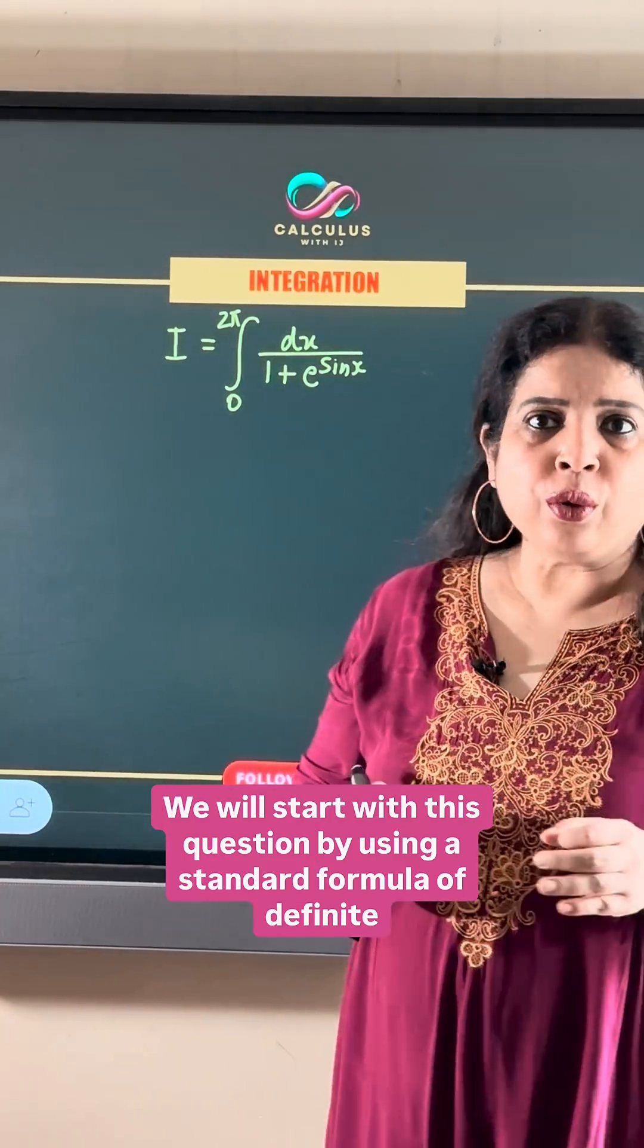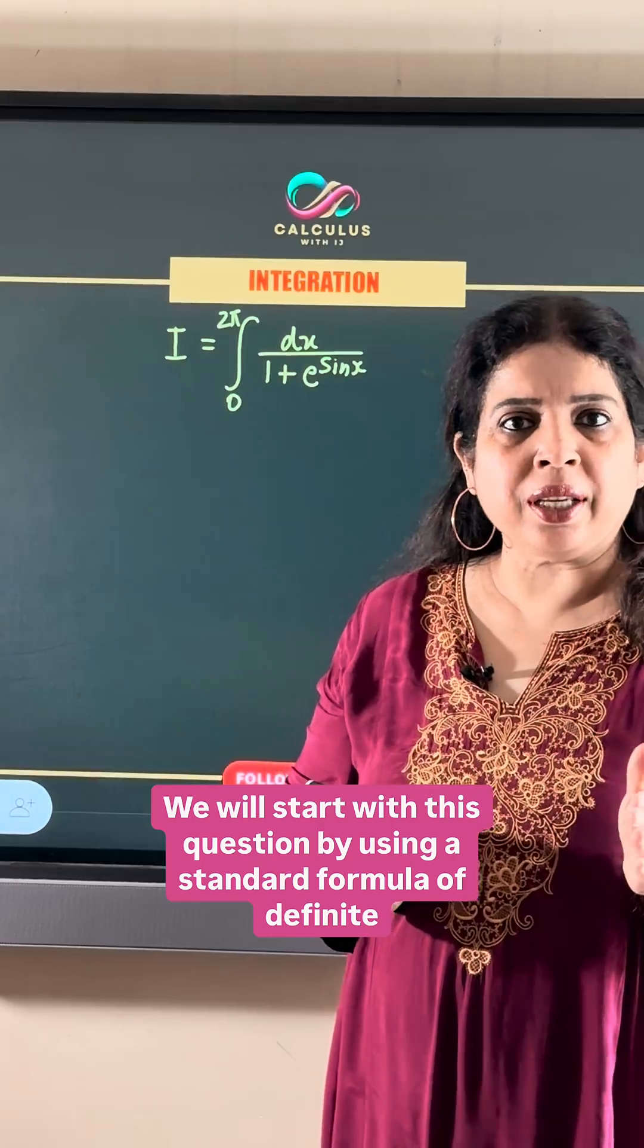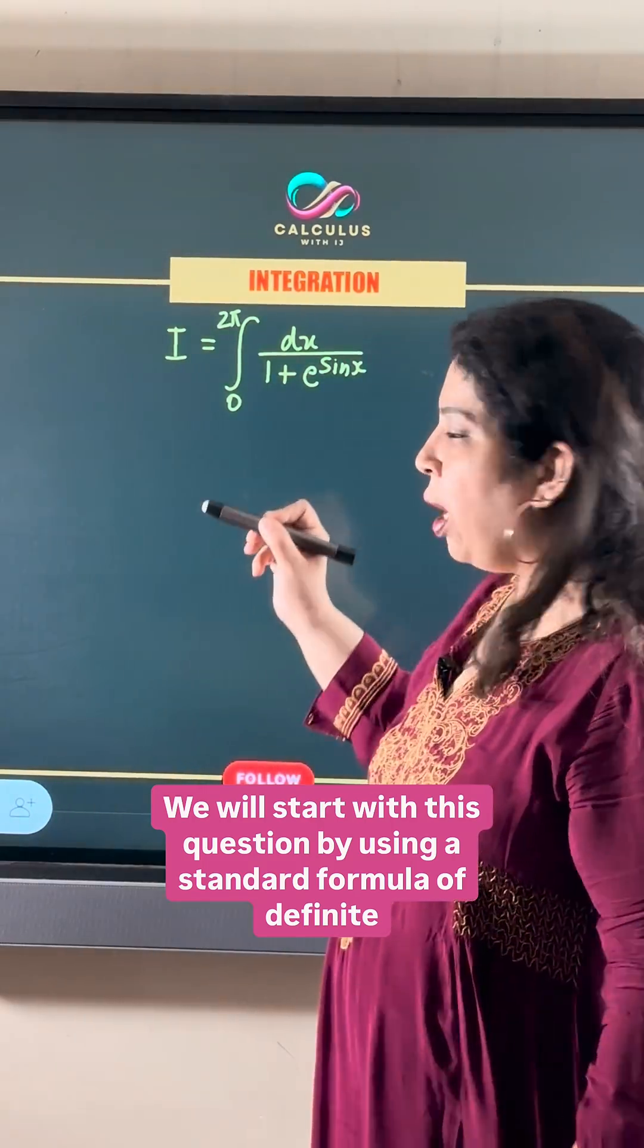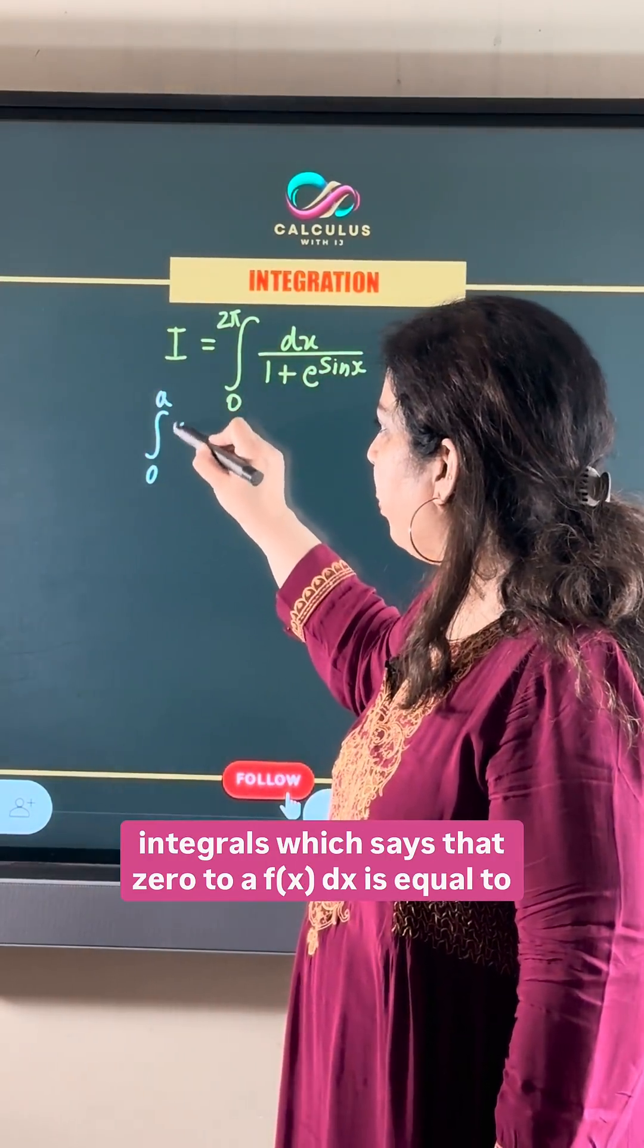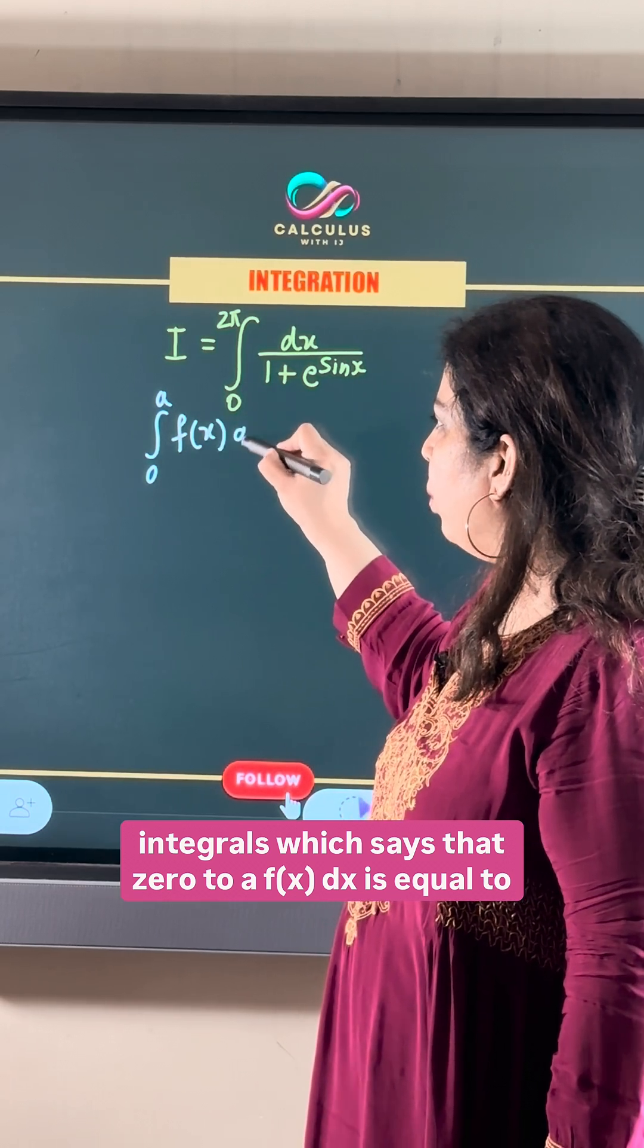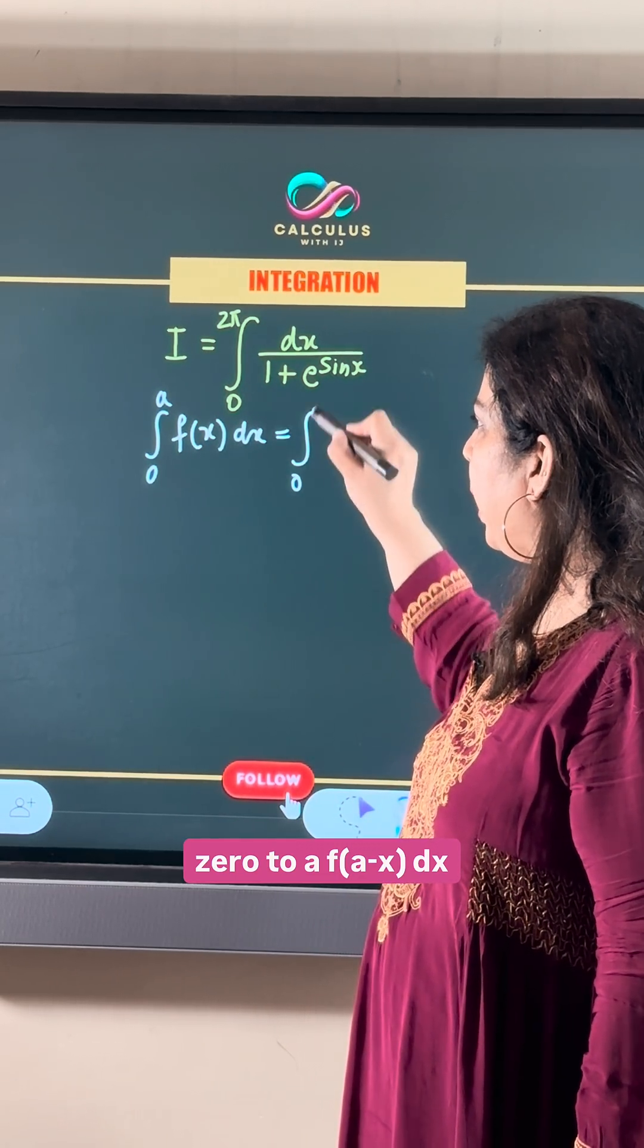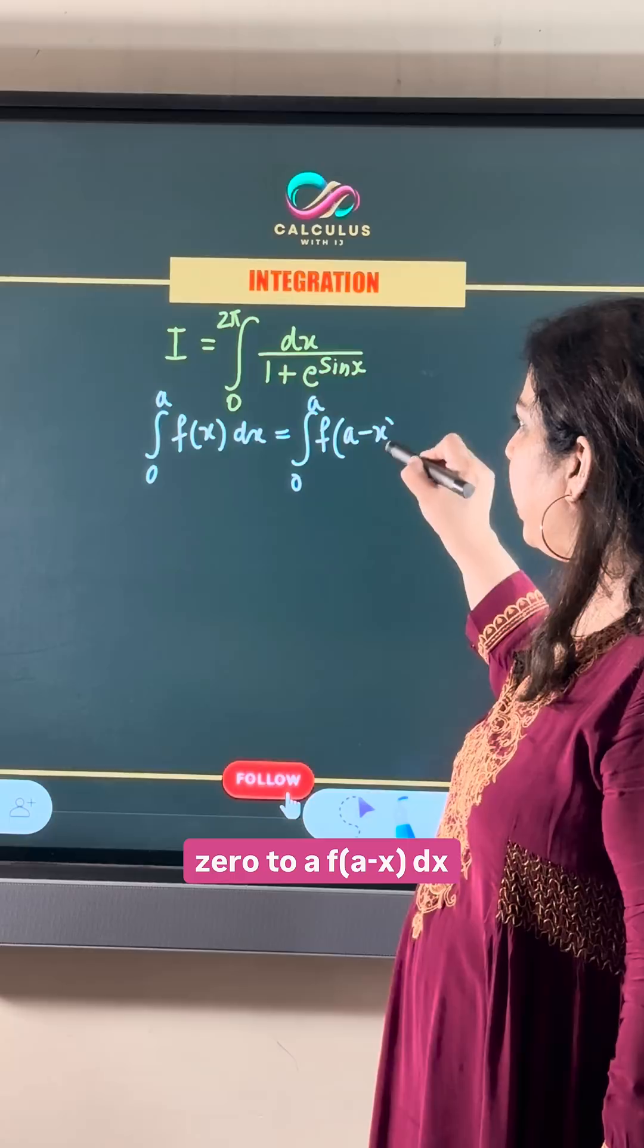We will start with this question by using a standard formula of definite integrals which says that integral 0 to a of f(x) dx is equal to integral 0 to a of f(a minus x) dx.